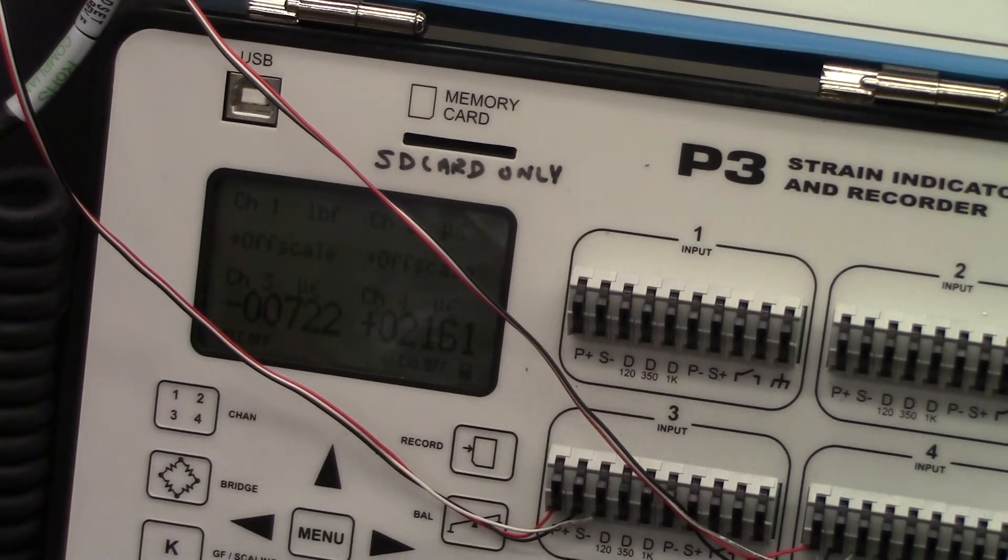This is 6061 T6 aluminum, so they can find Poisson's ratio for that in their textbook or on MatWeb or someplace online. So then the last thing we'll do is take the load down to zero, and then we'll check the residual strains and see if we need to make any adjustments to them.